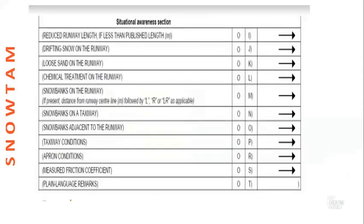The situational awareness section follows. Fields include: reduced runway length, drifting snow on the runway, loose sand on the runway, and chemical treatment on the runway — which is mandatory. Then snow banks on the runway, snow banks on taxiway, snow banks adjacent to runway, taxiway conditions, and apron conditions.